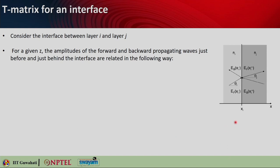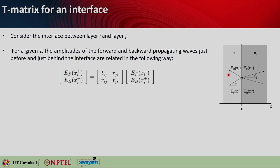Here is the pictorial representation. Consider the interface between layers n_i and n_j, located at position x_i. The transfer matrix for one interface will relate fields on both sides. Anything before x_i is written with subscript x_i-minus, and anything after x_i is written as x_i-plus. We will write the forward and backward propagating waves in both regions.